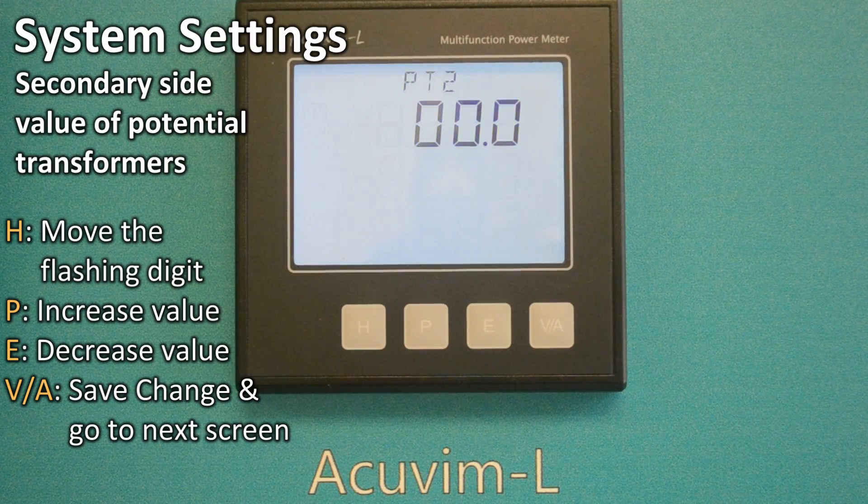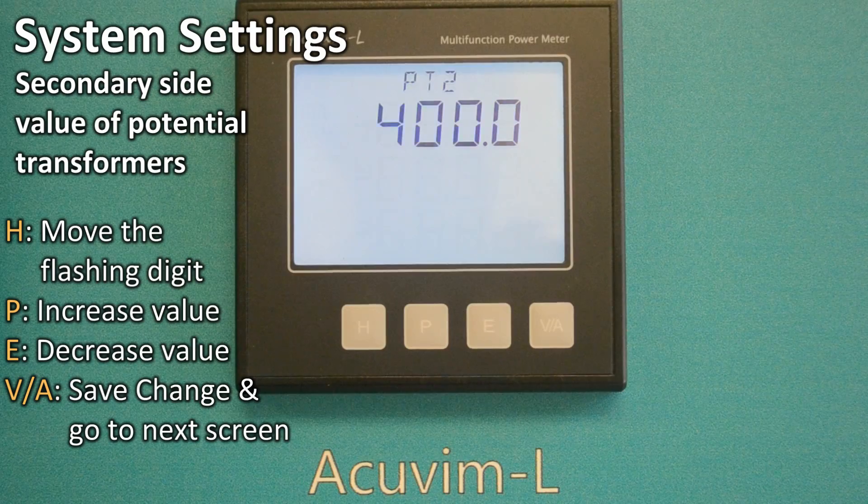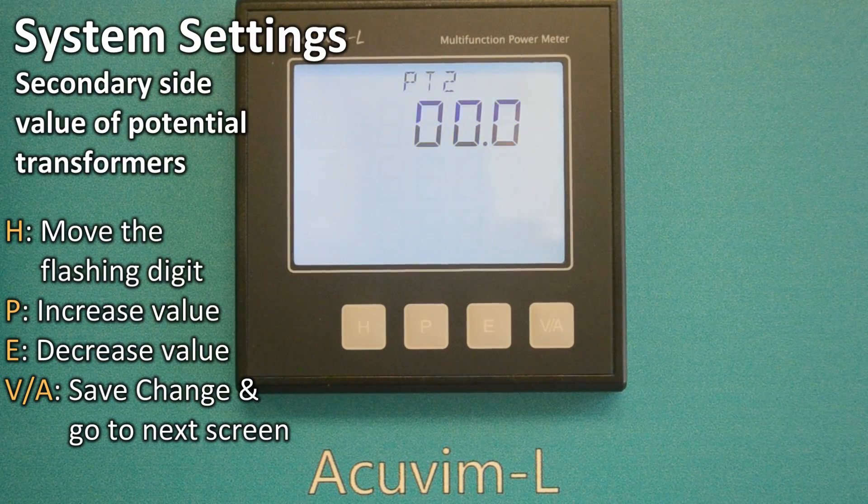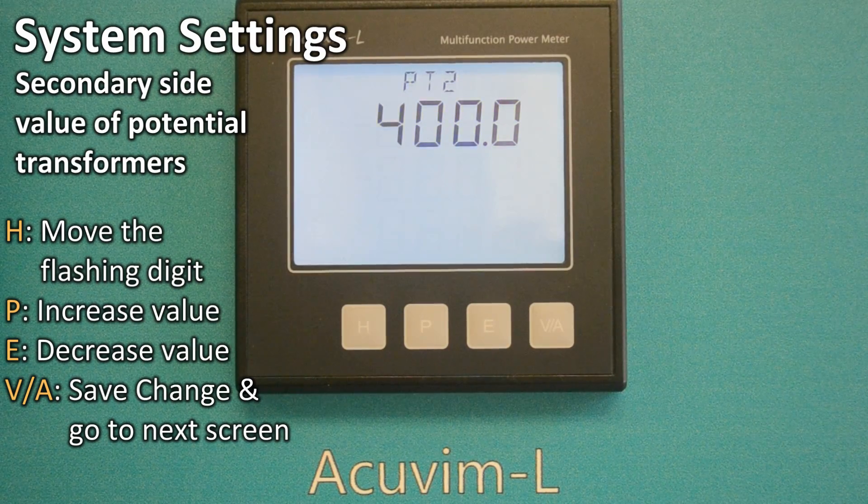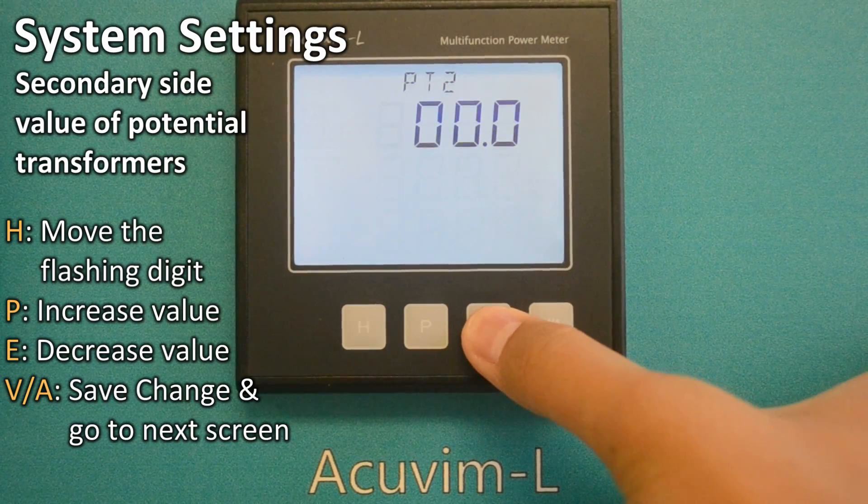PT2 400V indicates the secondary side value of the potential transformer. In this case, we need to change it to 120 volts, and the same PT setting process applies as PT1.